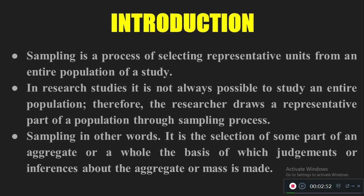In research, every study will have a population and a sample. Without selecting a sample, research is not at all possible. Every researcher has to identify their population, apply some sampling process, find out what size of sample they need, and select either by using a probability sampling method or a non-probability sampling method. Simply, sampling is the selection of some part of the aggregate or a whole — for example, from 10,000 people, selecting around 100 or 1,000 as the sample.